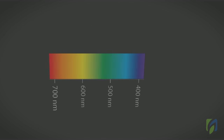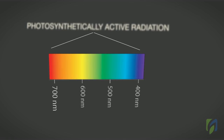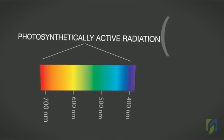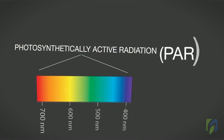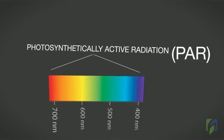The light wavelengths between 400 and 700 nanometers, which affect plant growth, are referred to as photosynthetically active radiation, or PAR.